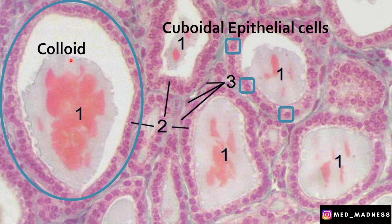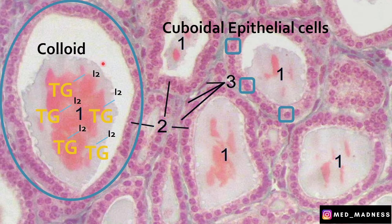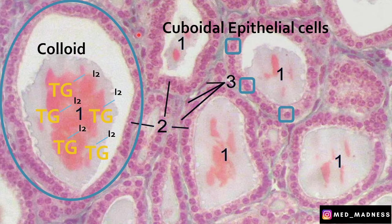This colloid contains a very important glycoprotein called thyroglobulin. This thyroglobulin is secreted by the cuboidal epithelial cells, and this thyroglobulin is iodinated to form the thyroid hormones. So when this gland gets the stimulus, the thyroid hormones are cleaved off from thyroglobulin and released into the circulation. So colloid is nothing but iodinated thyroglobulin.